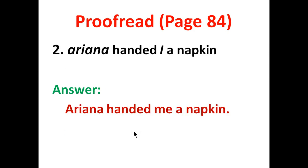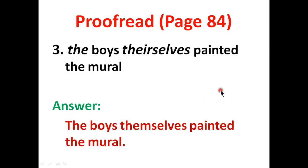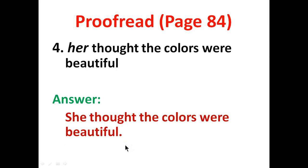Number two on page 84: 'Ariana handed I a napkin' — the correct answer is: Ariana handed me a napkin. Number three: 'The boys themselves painted the mural' — start with capital T, and the correct reflexive pronoun is 'themselves.' Note: 'mural' means a very large painting. Number four: the correct answer is: she thought the colors were beautiful.